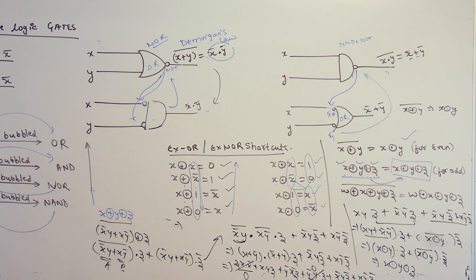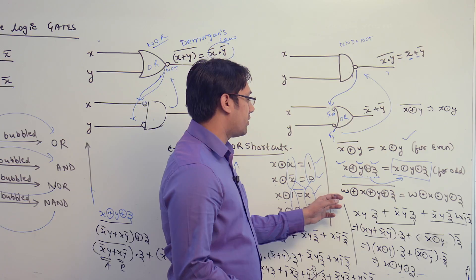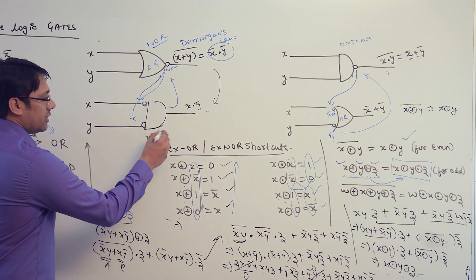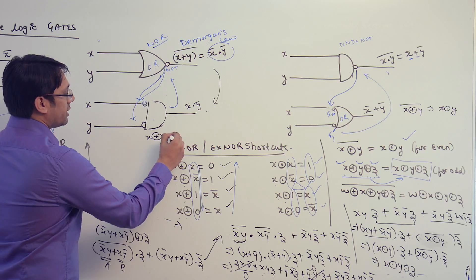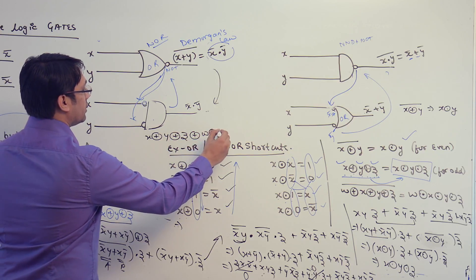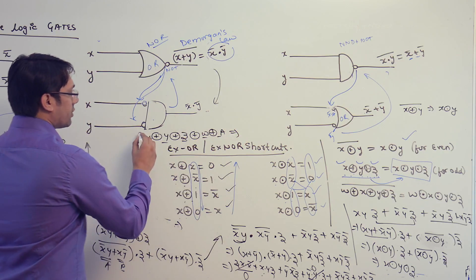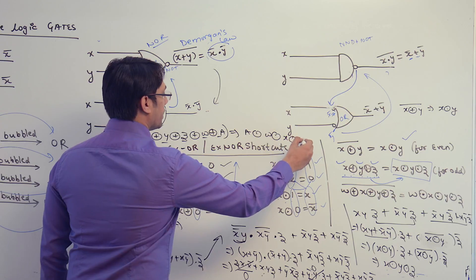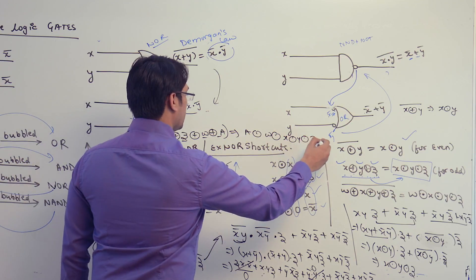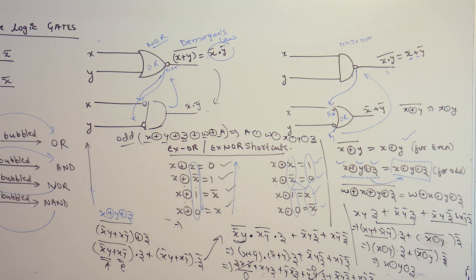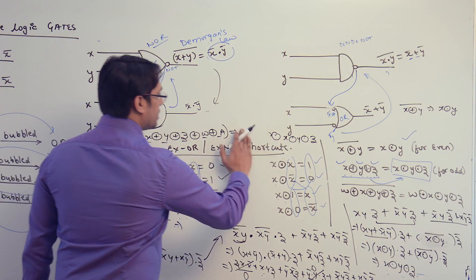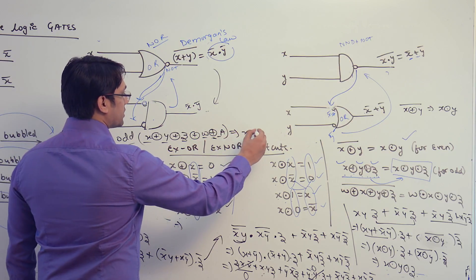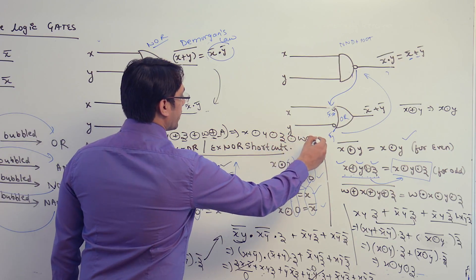For an even number of variables, if you take a complement, you can write it with XNOR. For example, if you have X XOR Y XOR Z XOR W XOR A — that is five variables, which is odd — therefore you can also write it as X XNOR Y XNOR Z XNOR W XNOR A. I still need to confirm whether XOR operations here are associative, but you can write it as X XNOR Y XNOR Z XNOR W XNOR A.